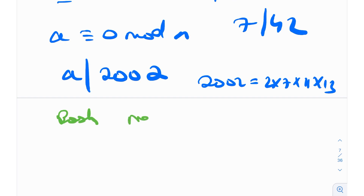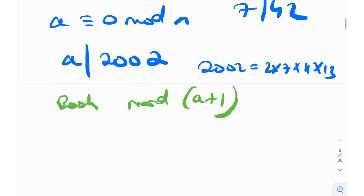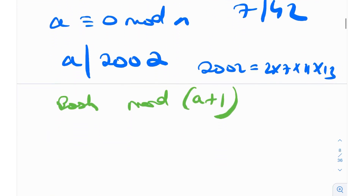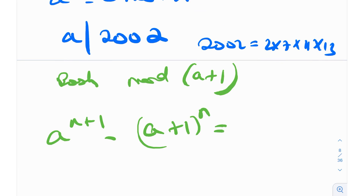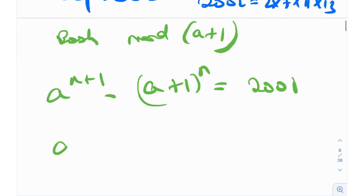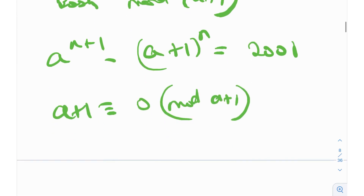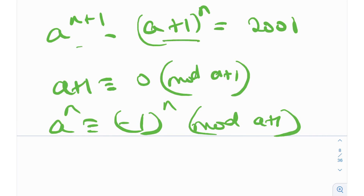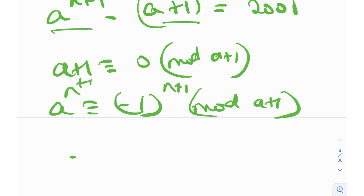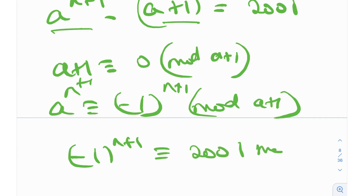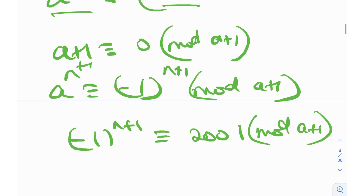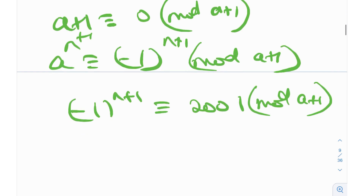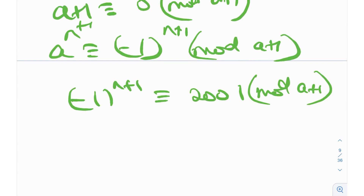Now let's bash mod A+1. Since A+1 ≡ 0 mod (A+1), we have A ≡ −1 mod (A+1), so A^N ≡ (−1)^N mod (A+1). Taking mod (A+1) on the original equation, the (A+1)^N term vanishes, giving (−1)^(N+1) ≡ 2001 mod (A+1). We don't know the parity of N yet, so we can't simplify further.